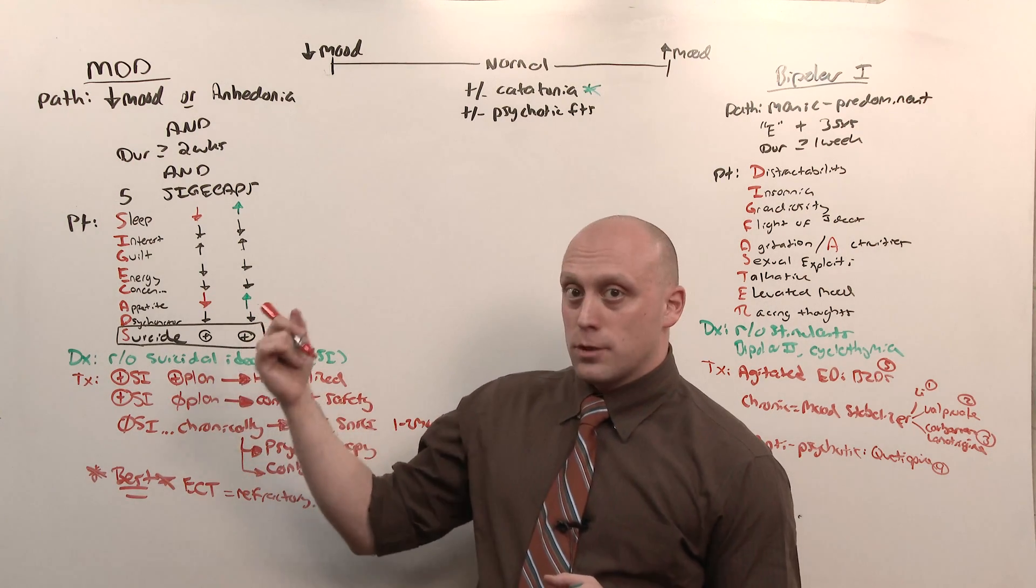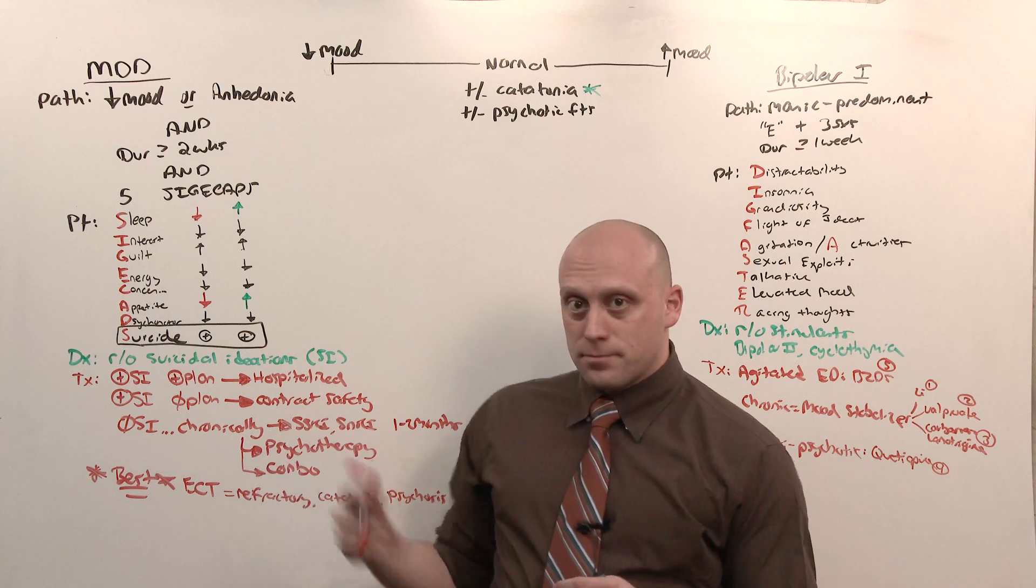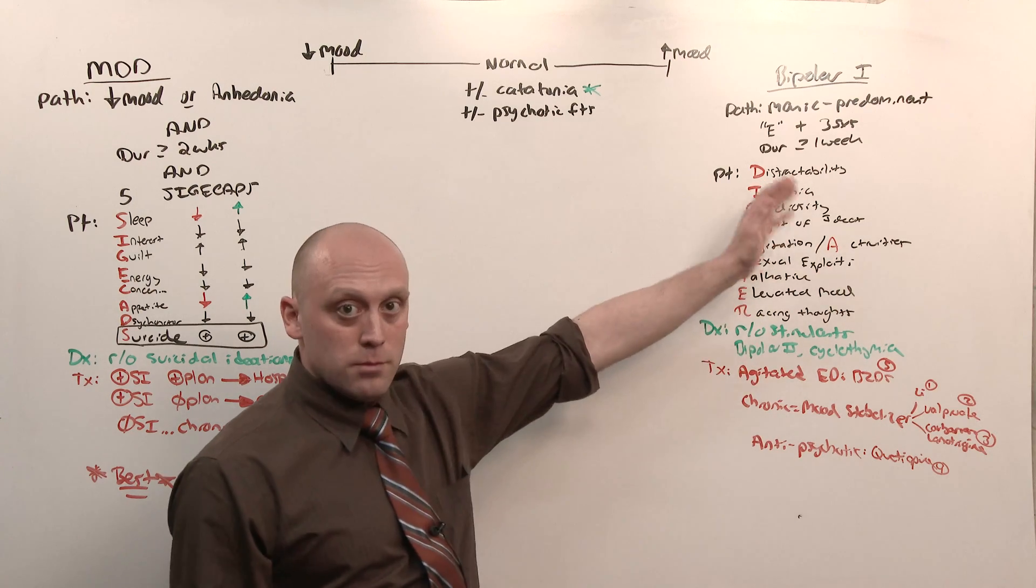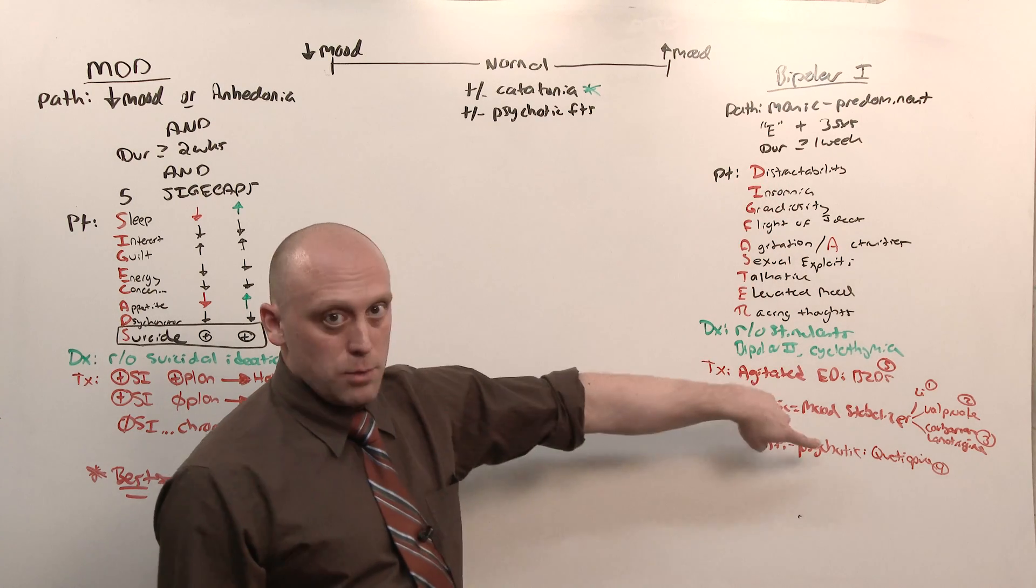Depression: moving slow, down, antidepressants. Bipolar 1: mania, up, mood stabilizers.